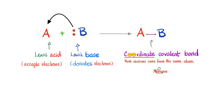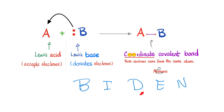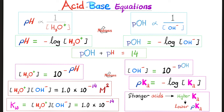Mnemonic: write the acronym BIDEN — Base, according to Lewis, Is a Donor of Electrons, and is a Nucleophile (negative). These acid-base equations are crucial before starting organic chemistry. If you have a strong acid, it will have higher Ka but lower pKa — because pKa is the negative log of Ka. A stronger acid has higher hydronium ion concentration but lower pH, because pH is the negative log of hydronium concentration.